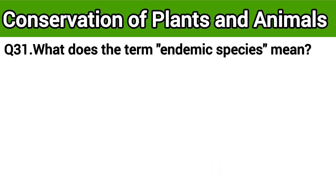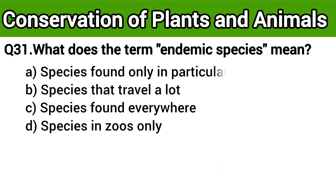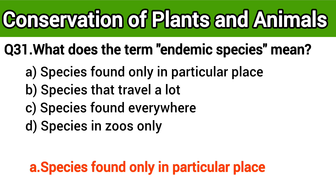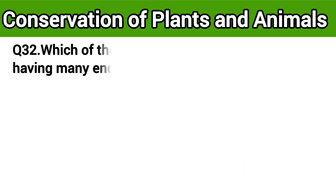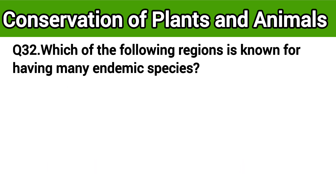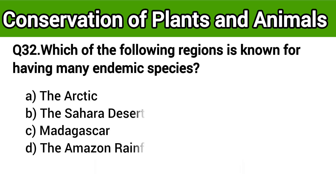Question number 31: What does the term endemic species mean? The right answer is option A: species found only in a particular place. Question number 32: Which of the following regions is known for having many endemic species? The right answer is option C: Madagascar.